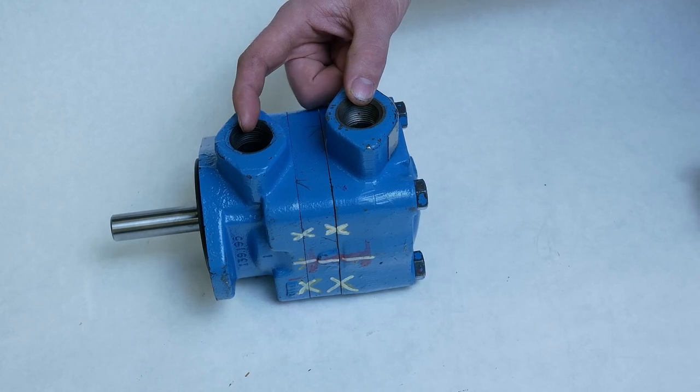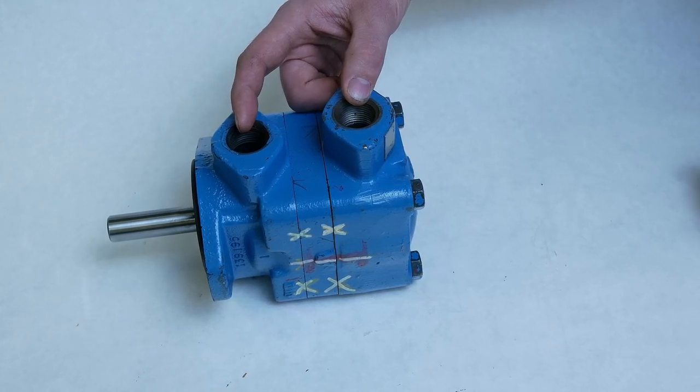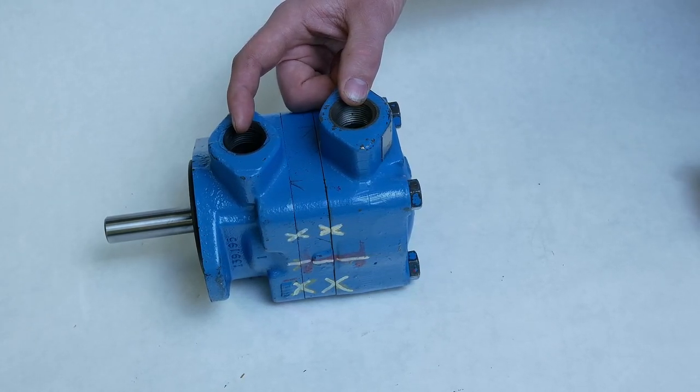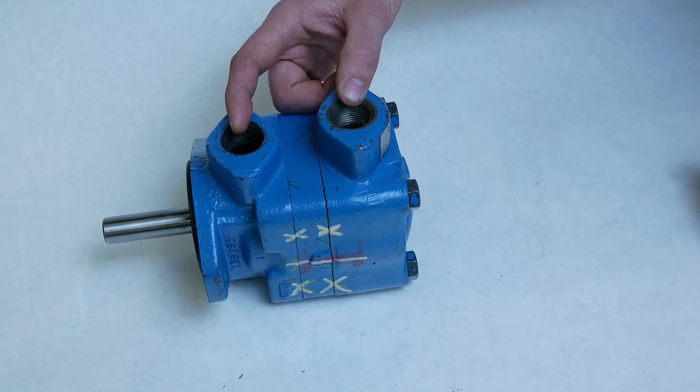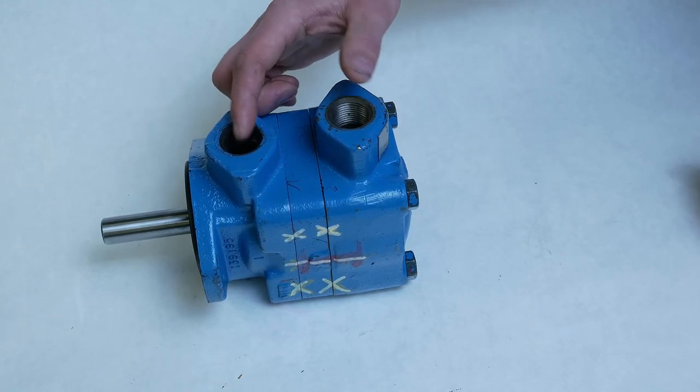Typically on a vane pump, the inlet would be larger than the outlet. But on a vane motor, because they're most commonly bi-directional and reversible, they'll be of equal size.